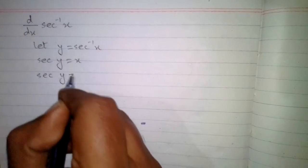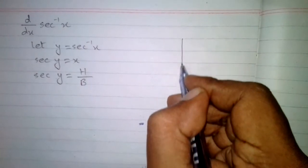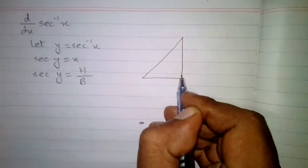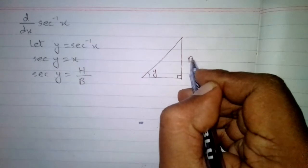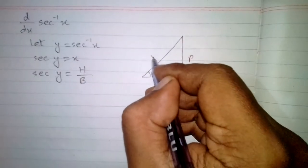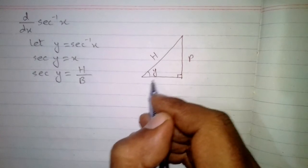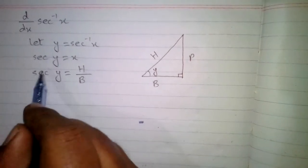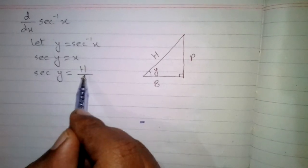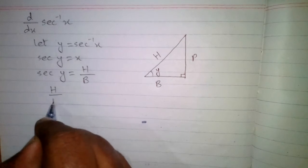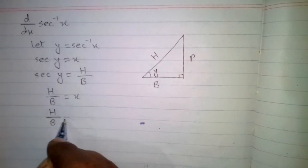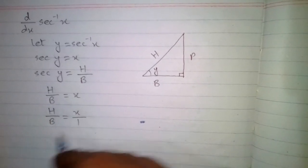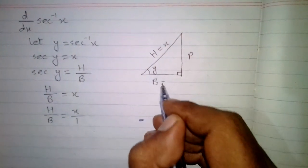We know that sec y equals hypotenuse upon base in a right angle triangle, so we can draw a right angle triangle in which this angle is y. The side opposite to this angle is perpendicular, the side opposite to 90 degrees is hypotenuse, and the side adjacent to y is base. Since sec y equals x and sec y equals hypotenuse upon base, we can write hypotenuse upon base equals x upon 1, so we suppose hypotenuse equals x and base equals 1.